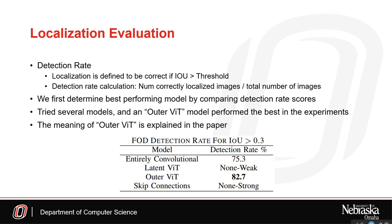With an understanding of the methodology, we will now discuss the experimental analysis of the proposed scheme. We propose a metric called detection rate to evaluate the method. Detection rate is defined as the number of correct localizations divided by the total number of images in the testing dataset. A localization is defined to be correct if the IOU of the predicted localization and the ground truth is above a threshold. The threshold used in the evaluation is 0.3. We create several different model architectures for the reconstruction component and compare them using this detection rate metric. In the experiments, the best performing architecture is the Outer-VIT model with a detection rate of 82.7%.